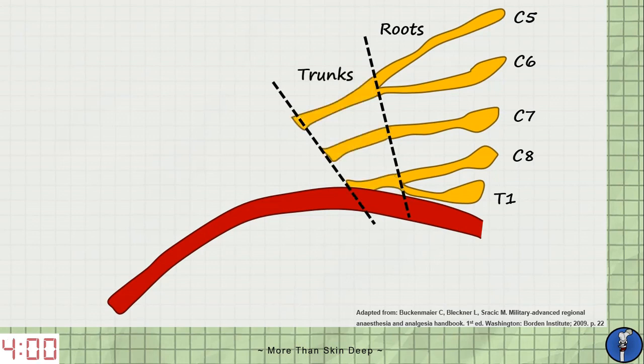The five roots coalesce into three trunks with C5 and C6 forming the superior trunk, C7 the middle trunk and C8 and T1 the inferior trunk. The trunks pass over rib one to enter the axilla.